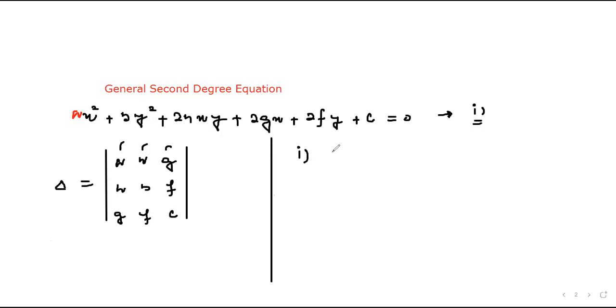Condition number one is, if this determinant is singular, that is, if the determinant equals zero, it's a pair of straight lines. That is, if the value of this comes out to be zero, then we can say that this second degree equation represents a pair of straight lines.